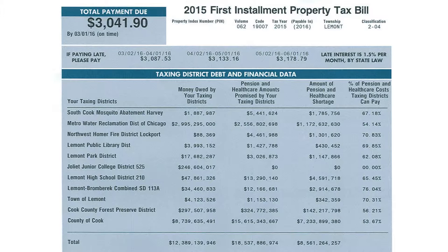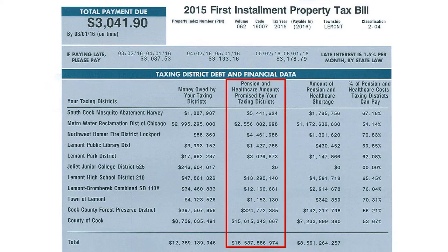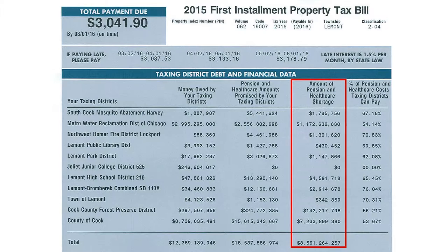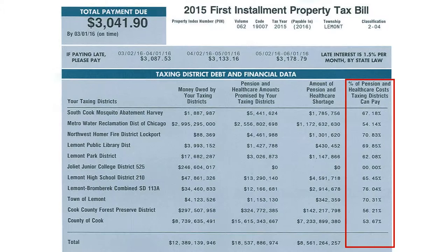To the right are the four categories of financial information supplied by the local governments: money owed by your taxing districts; pension and health care amounts promised by your taxing districts; amount of pension and health care shortage; and percent of pension and health care costs taxing districts can pay.